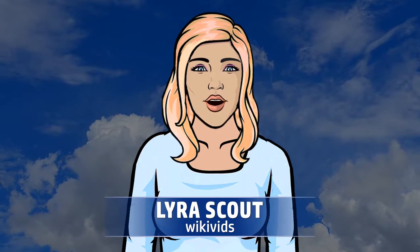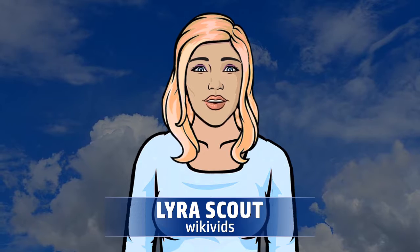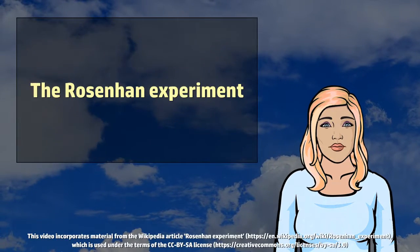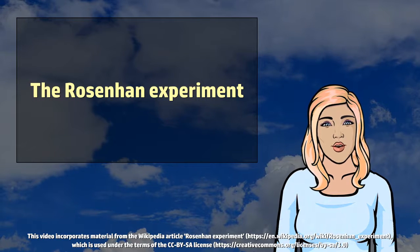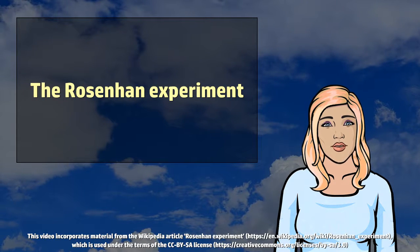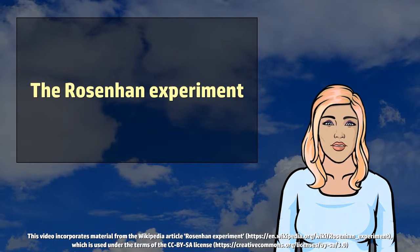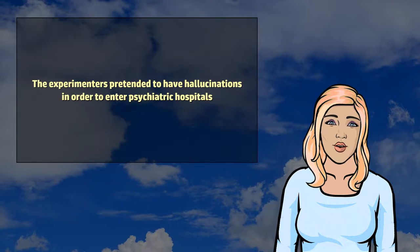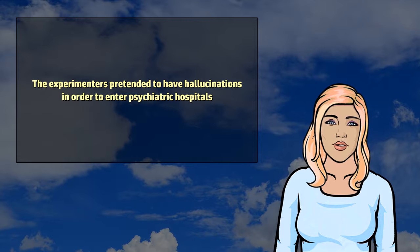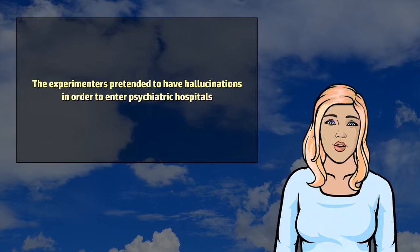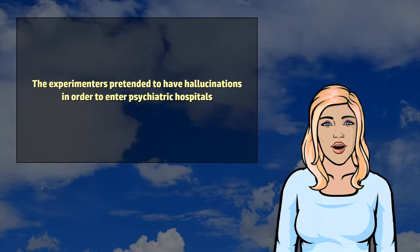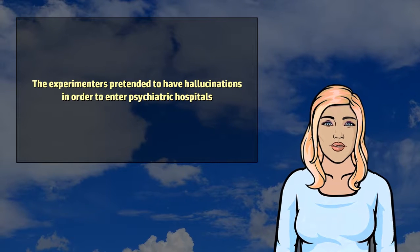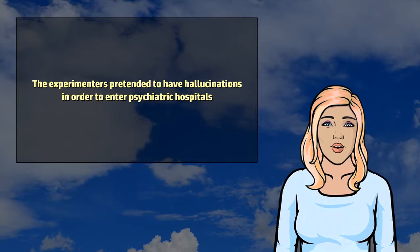Hi! My name is Lyra Scout, and this is a brief Wikibits video about the Rosenhan experiment. The Rosenhan experiment was conducted by Stanford University Professor David Rosenhan to determine the validity of psychiatric diagnoses. The experimenters pretended to have hallucinations in order to enter psychiatric hospitals, and then acted normally after being admitted. They were diagnosed with psychiatric disorders and given anti-psychotic drugs.